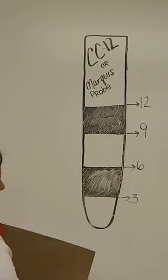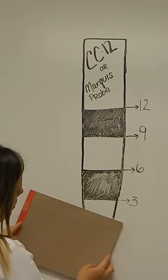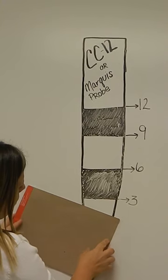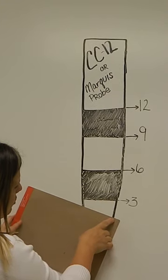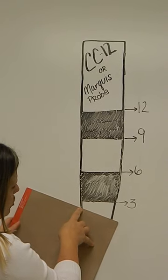When you're using this probe to measure, you do need to estimate. If my probe is at an angle, this reading right here, the bottom of the pocket is reading a 1, but we take the higher number. So this reading would actually be a 2.